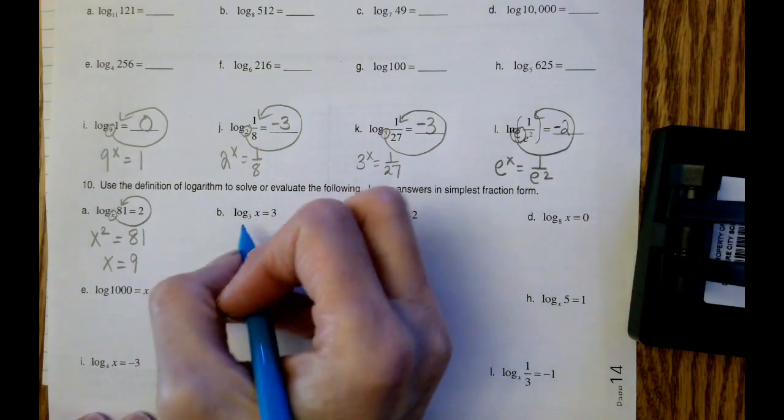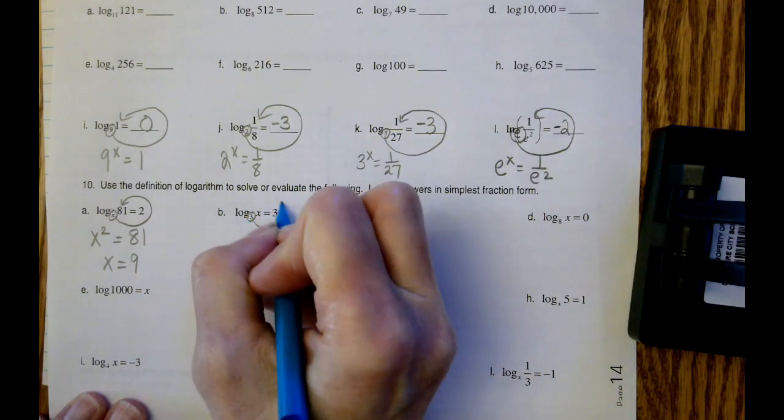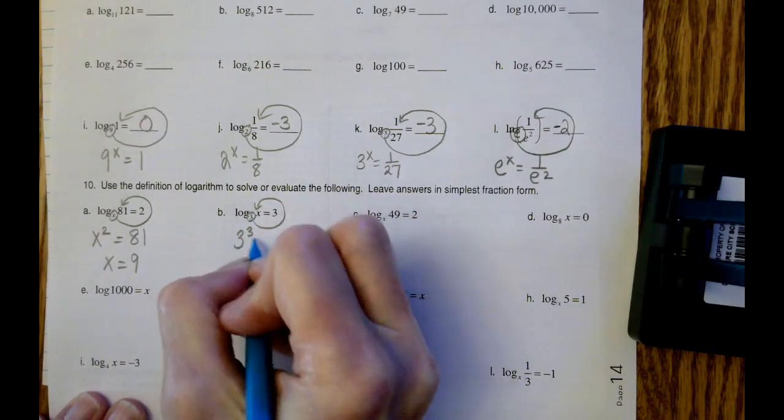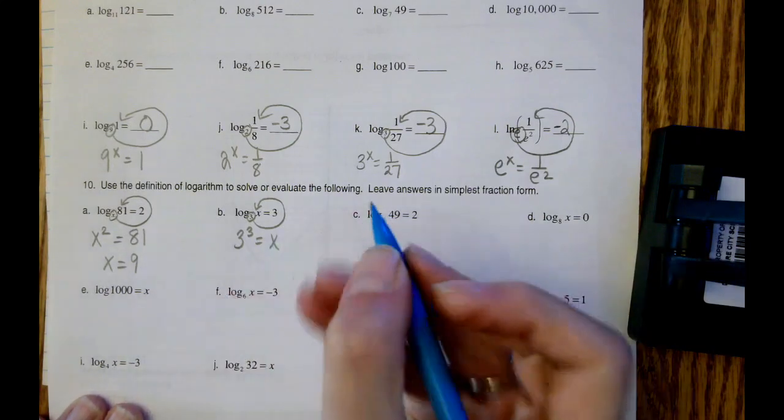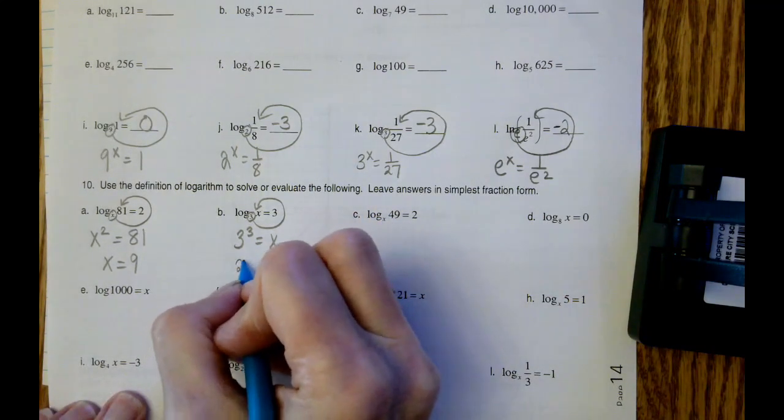Letter B. 3 to the 3rd. 3 cubed equals x. 3 cubed equals 27.